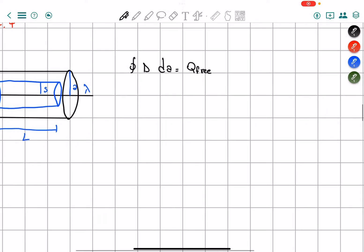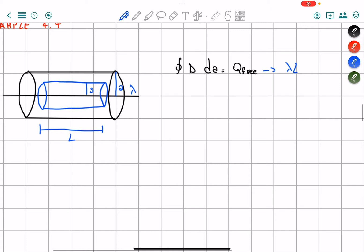So first of all, what is the free charge enclosed in our case? Well, the free charge enclosed is going to be equals to lambda times L. L is the length of our Gaussian surface that we draw on the inside.